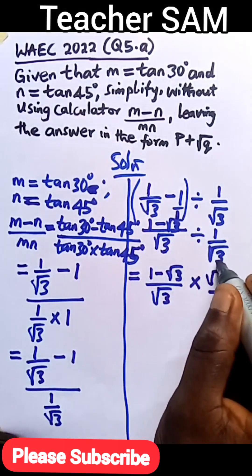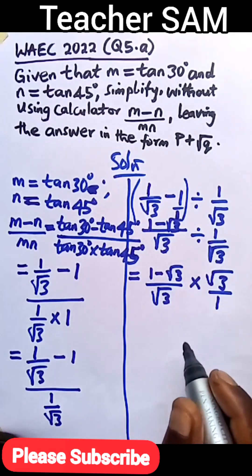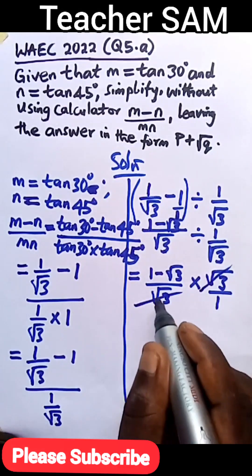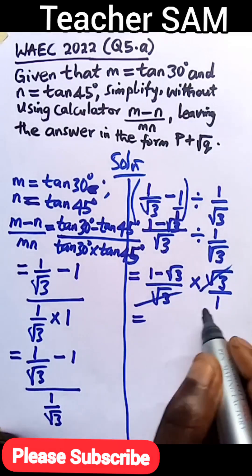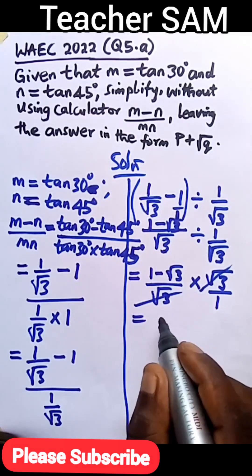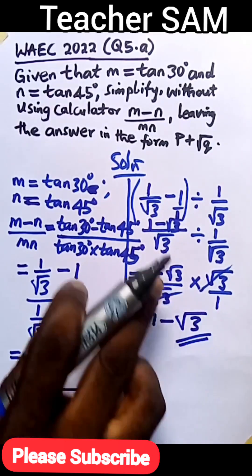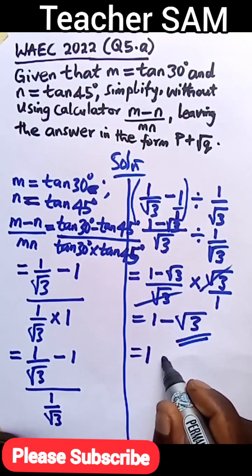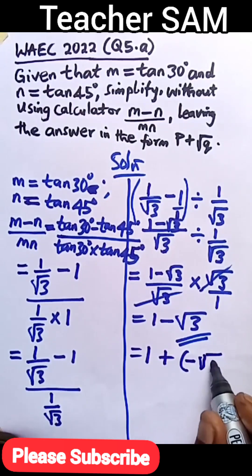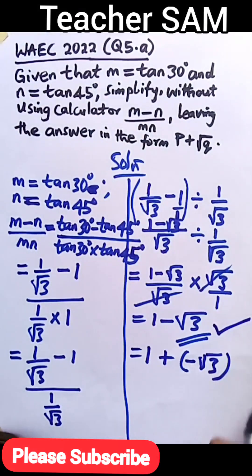When changing division to multiplication, we switch positions — 1 goes here, root 3 goes up. We cancel root 3, so we now have 1 minus root 3 divided by 1, which gives 1 minus root 3. So 1 minus root 3 is the answer, and it is in the required form — that is 1 plus negative root 3. This is the same as the form we were asked to leave it in, so that is our final answer.